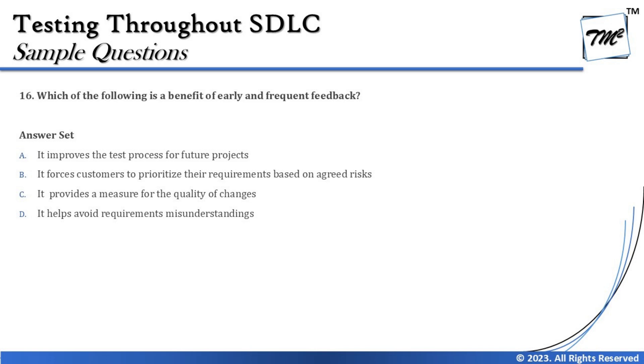Option B says: it forces customers to prioritize their requirements based on agreed risk. Prioritization is handled through product backlog grooming and refinement — it is the business's responsibility to prioritize product backlog items (PBIs), not something our team forces. Early and frequent feedback does not force the business to do anything — 'forcing' is the wrong word entirely. So option B is not a benefit.